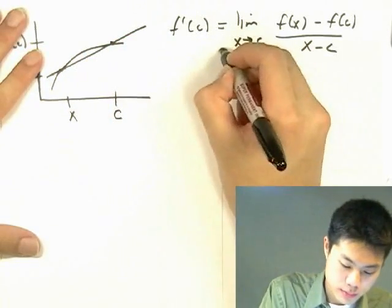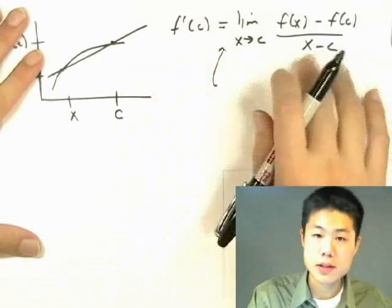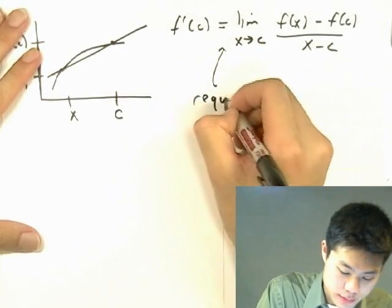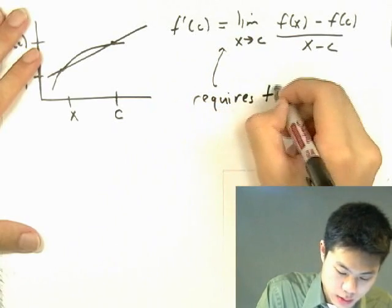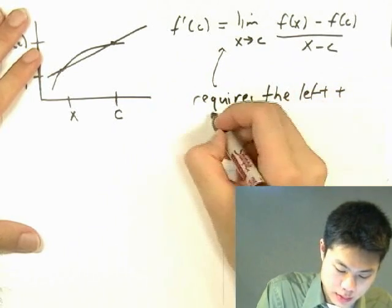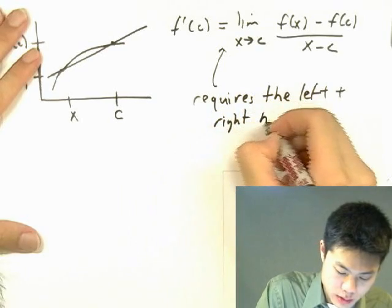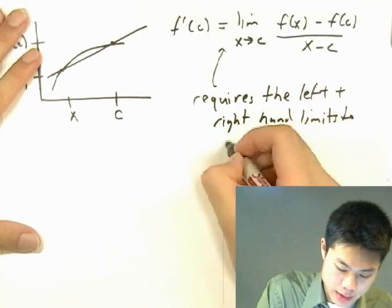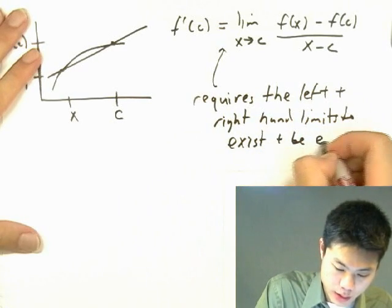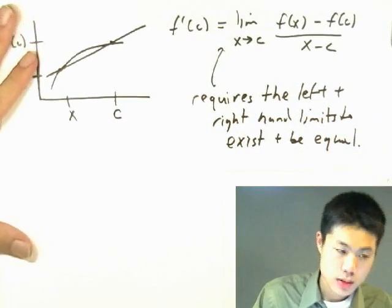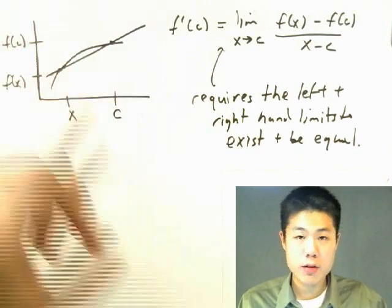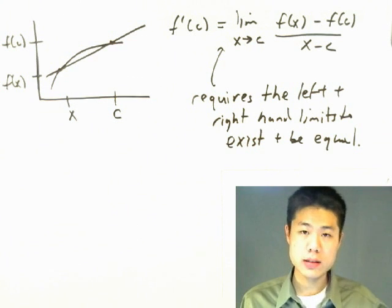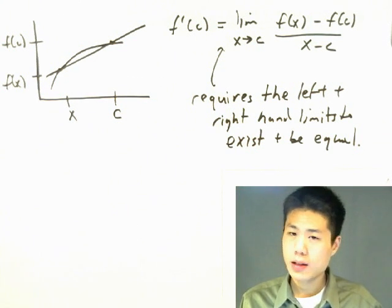The benefits of using this equation is that it requires the left-hand limit and the right-hand limit to exist and be equal. When the left-hand limit and the right-hand limit do not equal each other, or one of them does not exist, that means that the function is not differentiable.